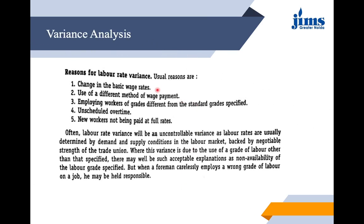The usual reasons for labor rate variance include: change in basic wage rates, use of a different method of wage payment, employment of workers of grades different from the standard grades specified, unscheduled overtime, and new workers not being paid at full rates. Often labor rate variance will be an uncontrollable variance because labor rates are usually determined by demand-supply conditions in the labor market, backed by the negotiating strength of trade unions. Where a foreman carelessly employs a wrong grade of labor, he may be held responsible.